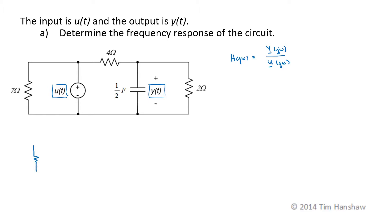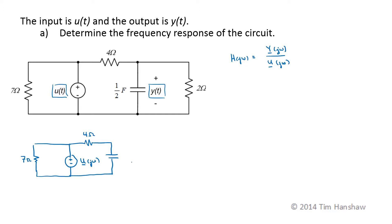Our 7 ohm resistor's impedance is 7 ohms. This voltage source becomes a phasor, U as a function of omega. The 4 ohm resistor has 4 ohms of impedance. The capacitor has an impedance of 1 over j omega C, which is going to be 2 over j omega. The voltage phasor Y of j omega is our output across the capacitor. And finally, this 2 ohm resistor.